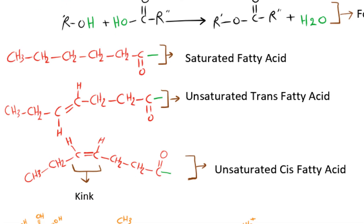The number of carbons in the two fatty acids could be different, so it is not always the same. Fatty acids could have single bonds or double bonds. Single bond fatty acids are called saturated fatty acids, and double bond fatty acids are called unsaturated fatty acids. The double bonds could be either cis or trans, and in the case of cis, we have a kink.